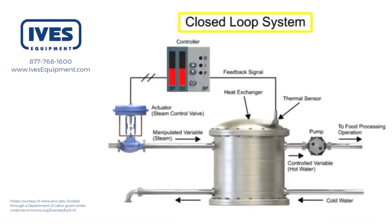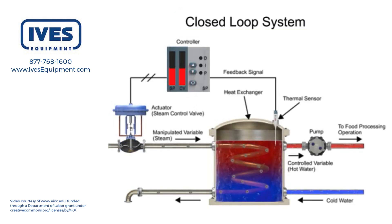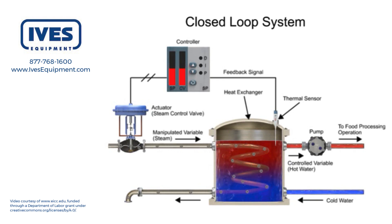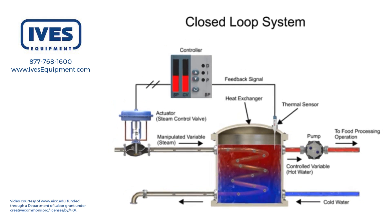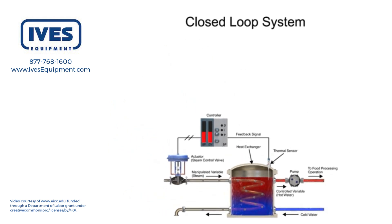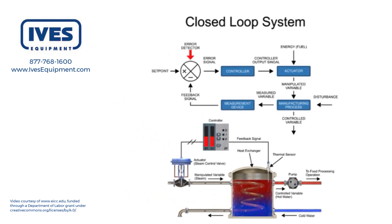The function of a closed loop system is to monitor and automatically maintain a variable at a desired set point in a manufacturing process. Using an example of a heat exchanger, the operation of a closed loop system is compared with a block diagram.